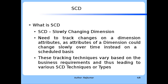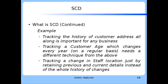For example, tracking the history of a customer address is important for any business — be it retail, pharmaceutical, health, or finance. Tracking the whole history of a customer address is important. And then tracking a customer's age, which changes every year on a regular basis, requires a different technique. Similarly, tracking a change in staff location by retaining only the previous and current details instead of the whole history requires yet another approach. Each of these examples requires a different tracking technique.